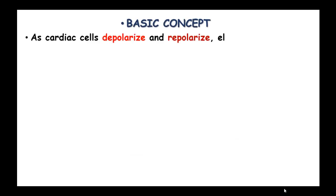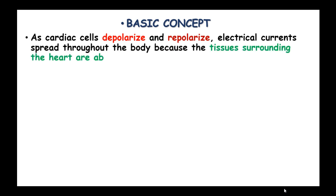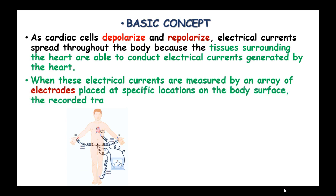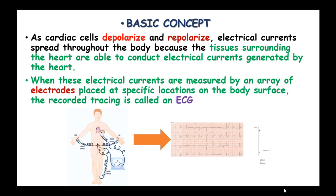An electrocardiograph. As the cardiac cells depolarize and repolarize, electrical currents spread throughout the body because the tissues surrounding the heart are able to conduct electrical currents which are generated by the heart. When these electrical currents are measured by an array of electrodes placed at specific locations on the body surface, the recorded tracing is called an electrocardiogram.